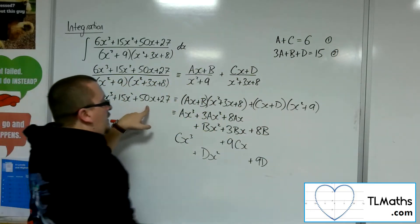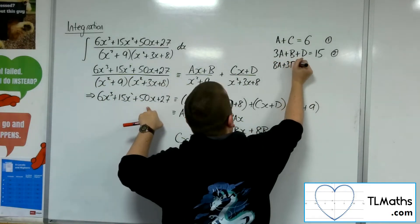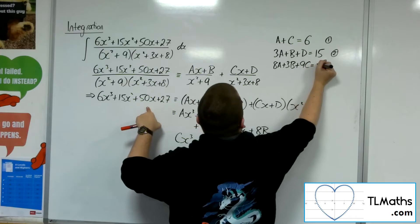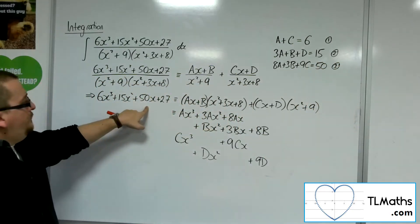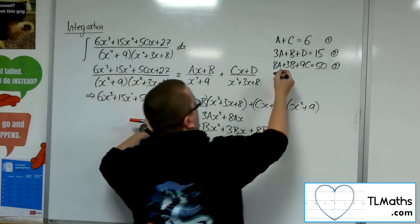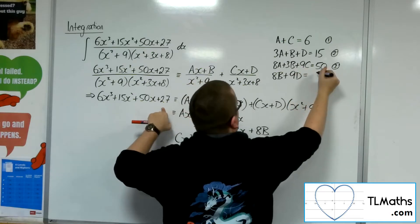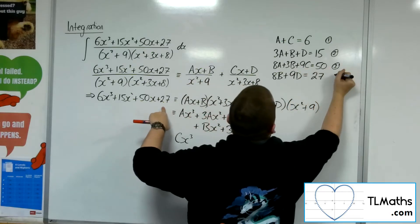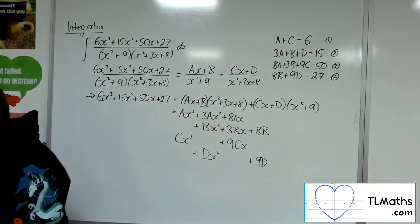Now for the x's, I've got 8a plus 3b plus 9c. And that's got to be 50. That's equation number 3. And then I've got 8b plus 9d. That's got to be 27. So that's equation number 4.